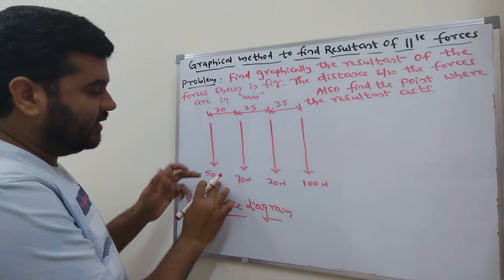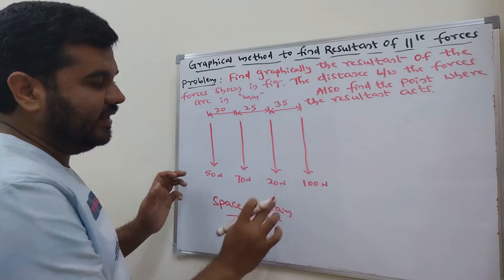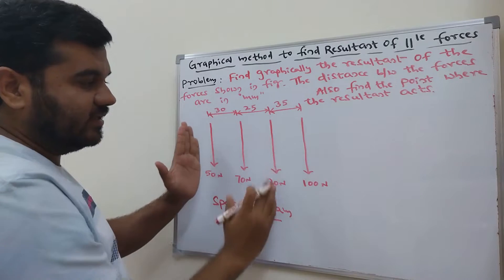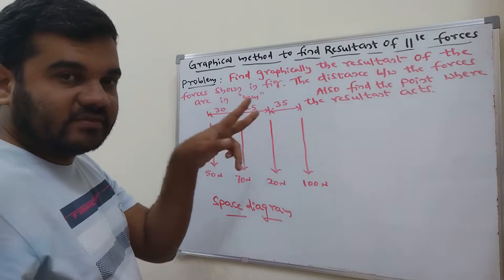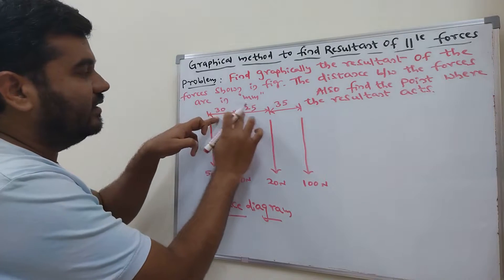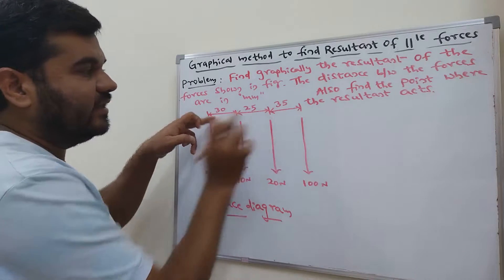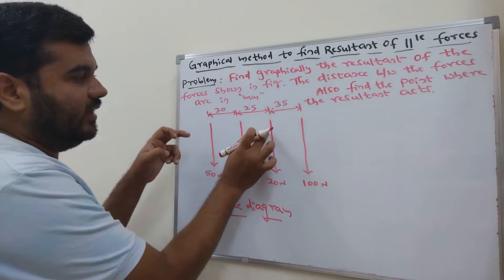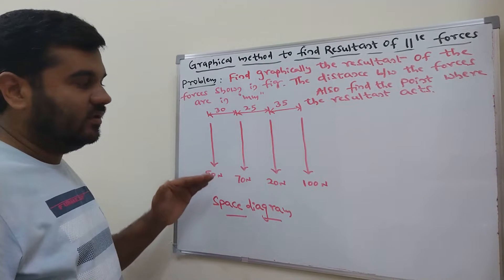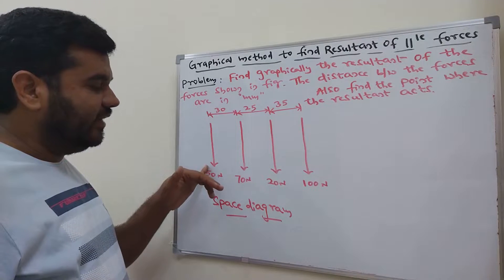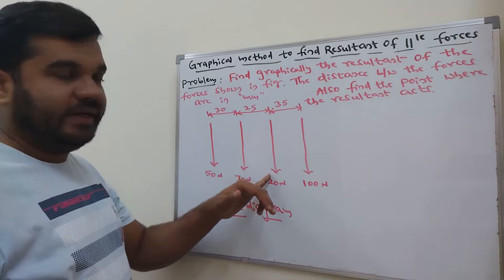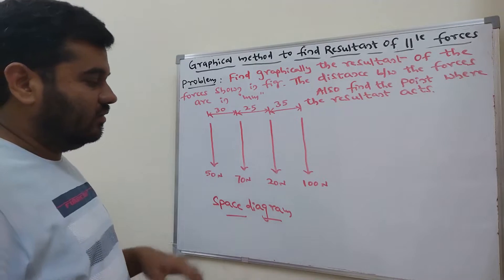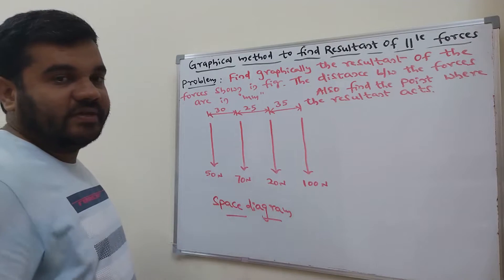Draw 50 newton, 70 newton, 20 newton, and 100 newton forces. For the forces, you don't need a scale for the arrows, but for the distances between them use the actual measurements: 30 mm, 25 mm, and 35 mm. This completes the first step.